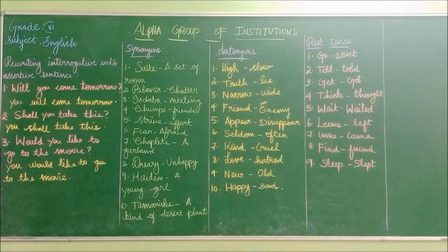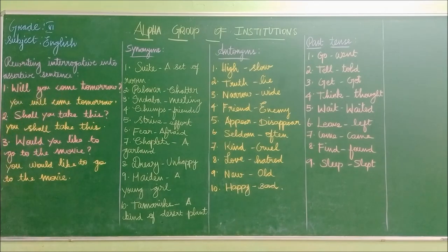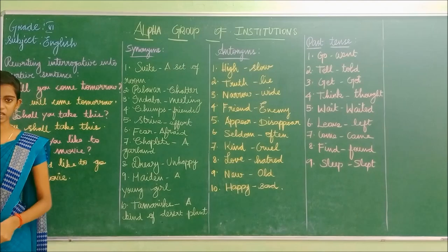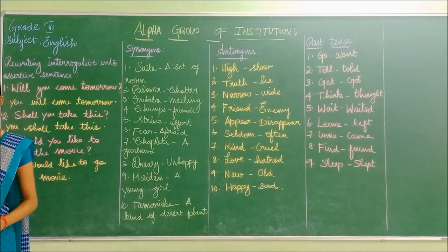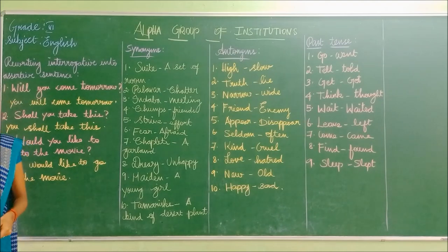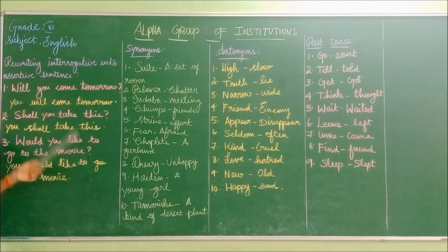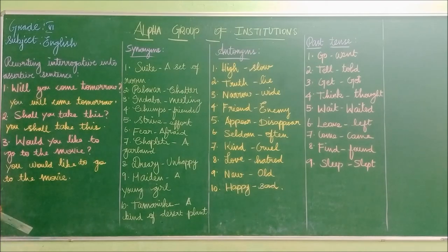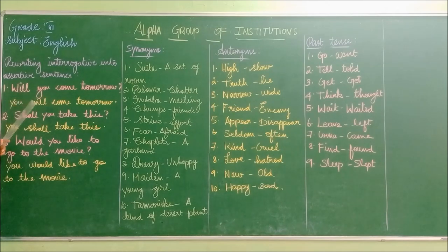Next we are going to see how to rewrite an interrogative sentence into an assertive sentence. We just learned what assertive and interrogative sentences are. For example: 'Will you come tomorrow?' — this is an interrogative sentence because it ends with a question mark. We are going to rewrite this interrogative sentence into an assertive sentence.